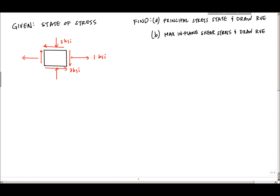One of the first things you want to do is draw the coordinate system for the representative volume or the stress state given to you. Here I define positive x to the right and positive y upwards, so y tags along according to the right-hand rule. I could have drawn x going upwards and y going to the left, or x going to the left and y going down — any consistent orientation works. These coordinates are important for establishing directions and getting the proper sign convention for the stresses.